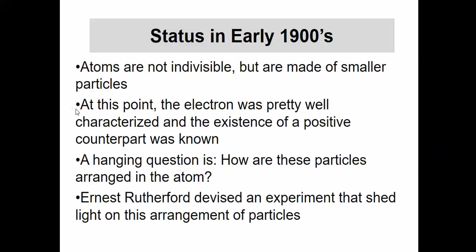The electrons are pretty well characterized. We knew its mass, we knew its electron charge, and all that sort of thing. But the question is, you have these subatomic particles - how do you arrange them in an atom? Rutherford devised an experiment that shed some light on this particular arrangement of particles.